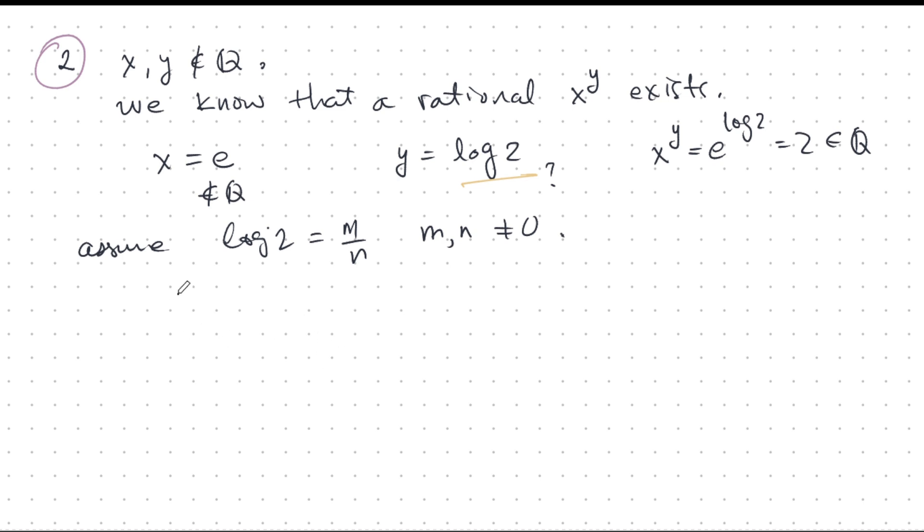So let's raise e to the power of both sides. Log 2, that's e to the m over n. But this gives us 2 equals e to the m over n. And I can change this around and get 2 power n equals e to the power m. Or finally, I can write it like this: e power m minus 2 to the n equals 0.